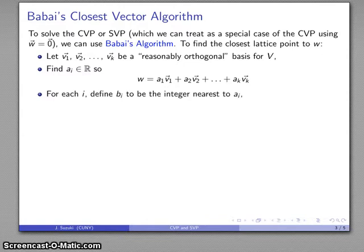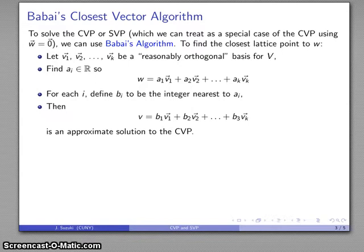For each, I define BI to be the integer nearest to the corresponding AI. Remember that the lattice itself consists of linear combinations of our basis vectors where the coefficients are integers. So I'll do the obvious thing: pick the integer closest to each of these coefficients and find the lattice point that corresponds. This lattice point is an approximate solution to my closest vector problem.